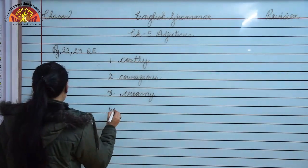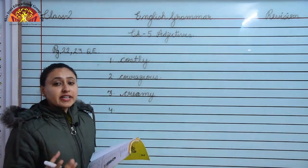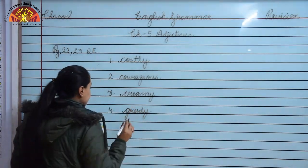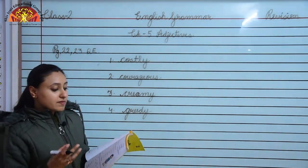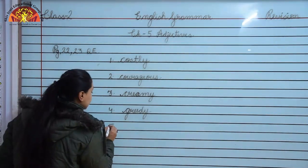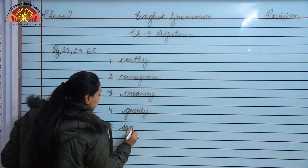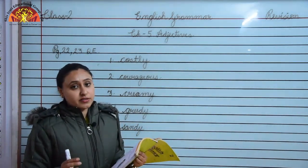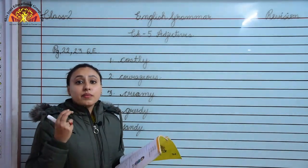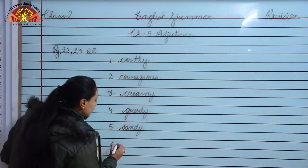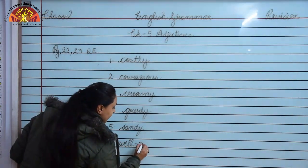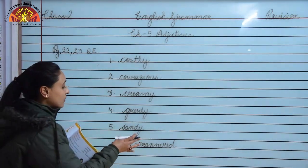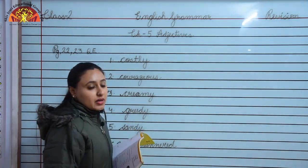Number 5: a beach full of sand - we call it sandy - S-A-N-D-Y. Number 6: someone who has good manners - we call them well-mannered. Spelling of well-mannered is W-E-L-L, M-A-N-N-E-R-E-D, well-mannered.